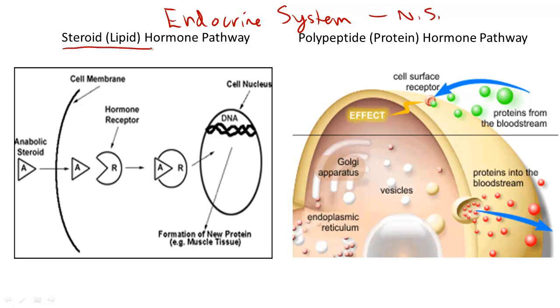There are two major types of hormones, though there are other types as well. The two major types we're going to discuss in this video are steroid hormones and polypeptide or protein hormones.